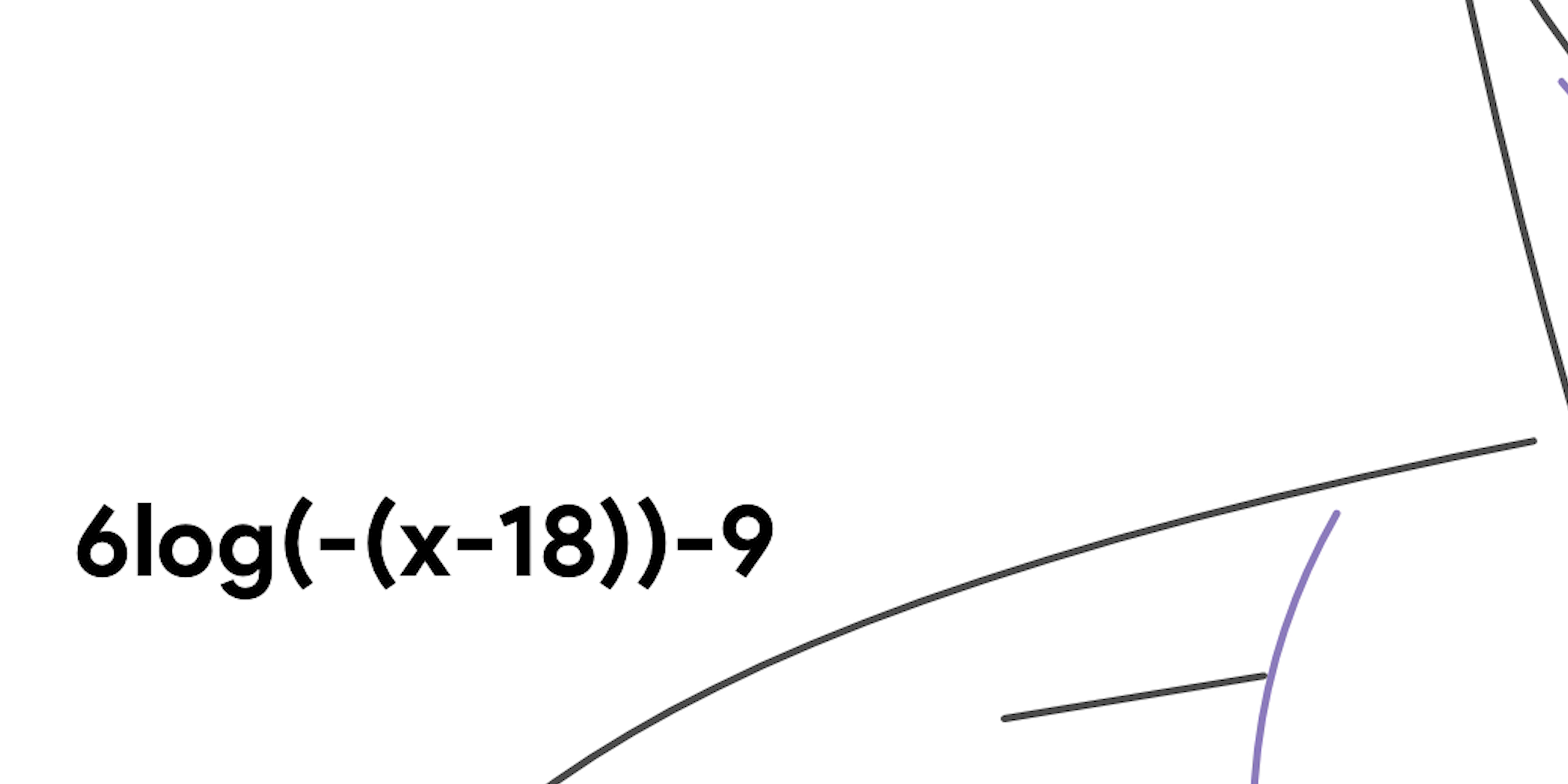You could distribute the negative to get negative x plus 18, and you'd still go right 18. This means I added 18. Then I subtracted 9 to go down 9. This function represents the shoulder of the Black Panther suit. Now that was a great journey.